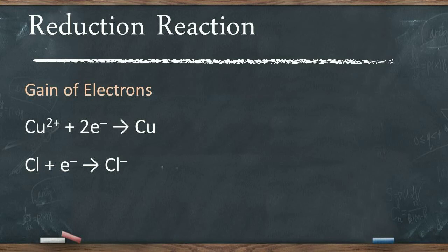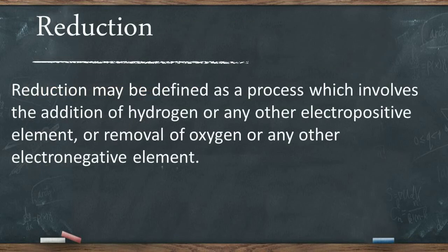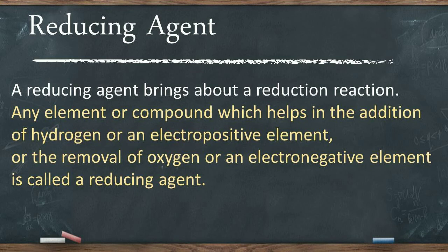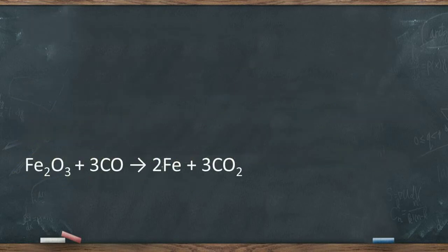An atom or an ion can gain electrons when an electropositive element is added to it, or when an electronegative element is removed from it. Therefore, reduction may also be defined as a process which involves the addition of any electropositive element, or the removal of an electronegative element. Reduction of a substance is brought about by a reducing agent, which may be defined as a substance that adds hydrogen or an electropositive element, or removes oxygen or an electronegative element from a substance. For example, in this reaction carbon monoxide has removed oxygen from ferric oxide, so carbon monoxide acts as a reducing agent.